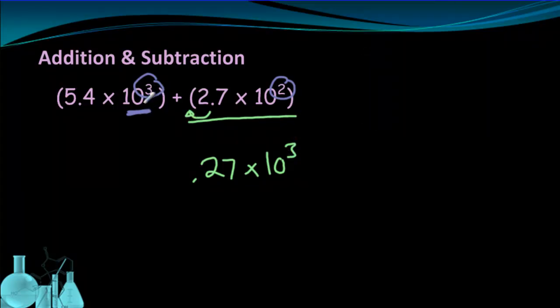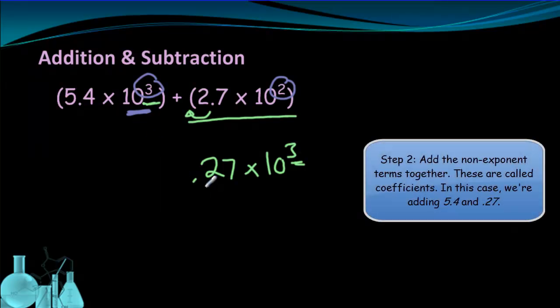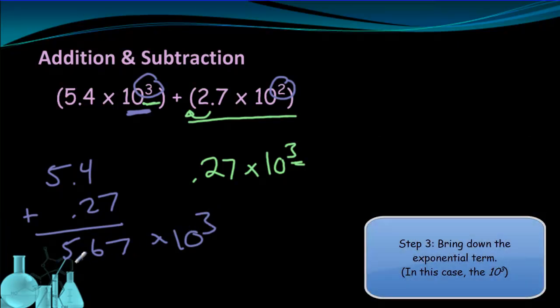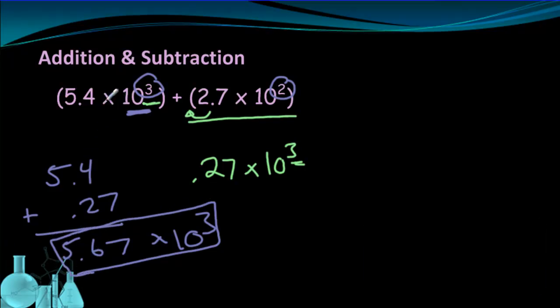Now that we have 10 to the third in both numbers, we can just take 5.4 and add 0.27 to it. So we line them up. 5.4 plus 0.27. And you add it like normal. Then bring down the exponent. And we have 5.67 times 10 to the third as our final sum of these two numbers.